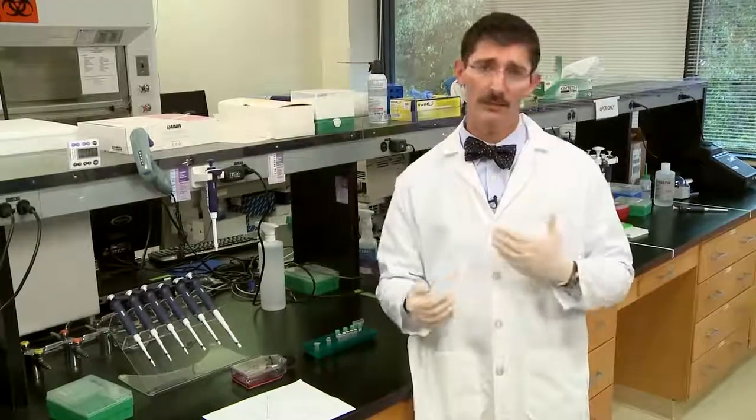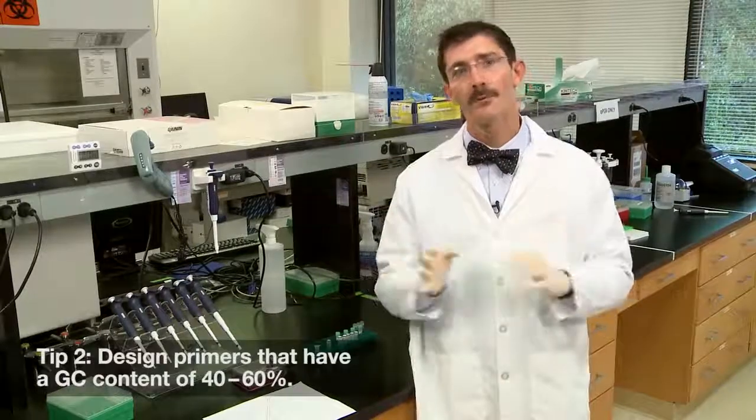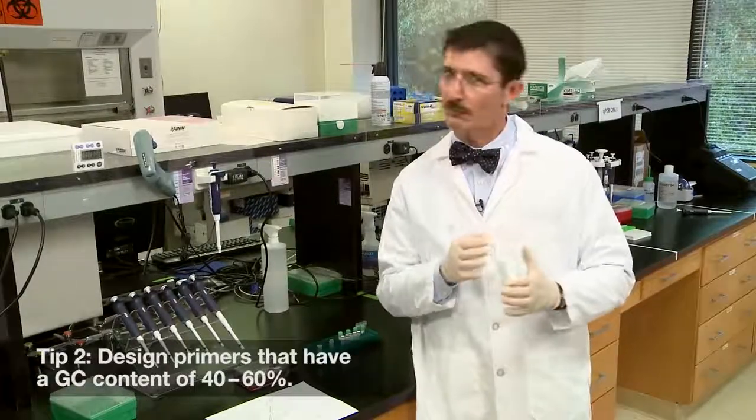If you're working with degraded samples, however, you may have to settle for that shorter amplicon. Tip number two: design primers that have a GC content between 40 and 60 percent.